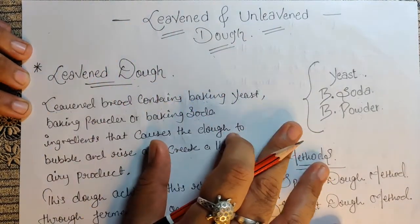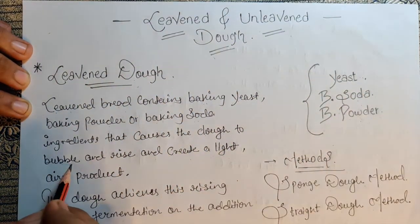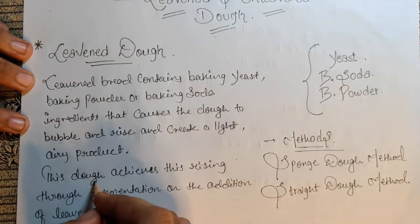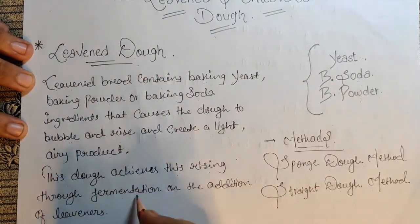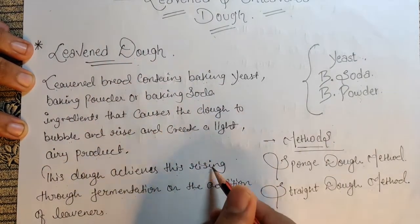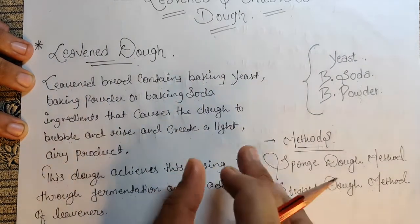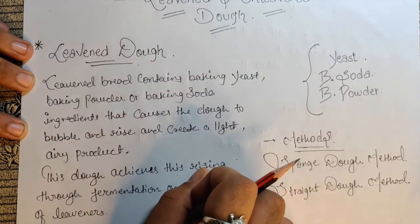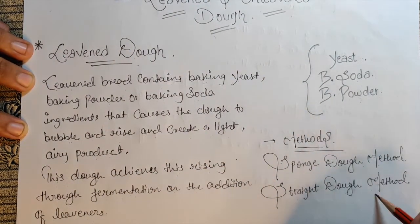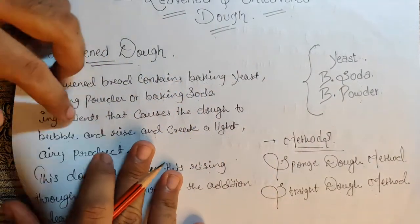Leavened dough means we are using any one of those elements to bubble up, rise, and create a light and airy product. This dough achieves its rise through fermentation or the addition of leavening agents — either going through the fermentation process or adding more leavening to get the desired rise. Methods include the sponge dough method and the straight dough method.